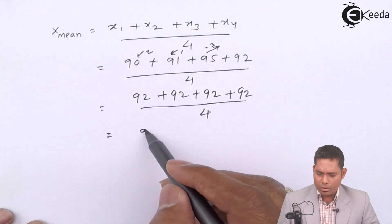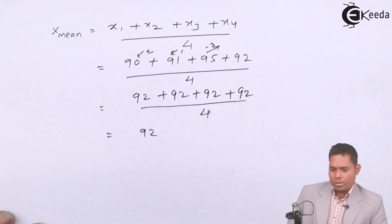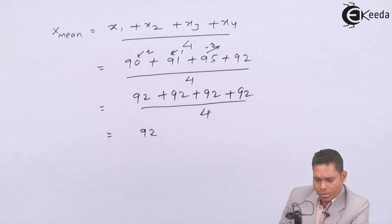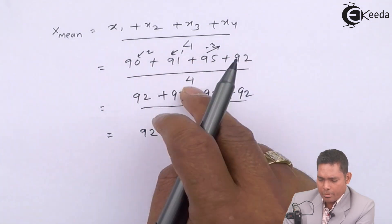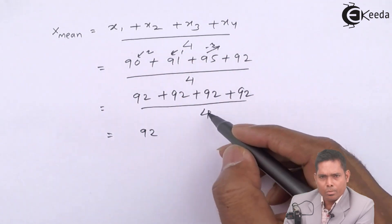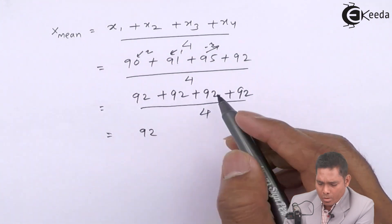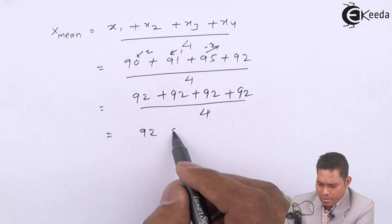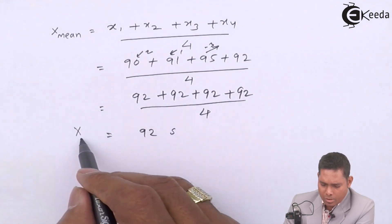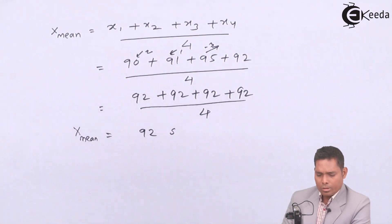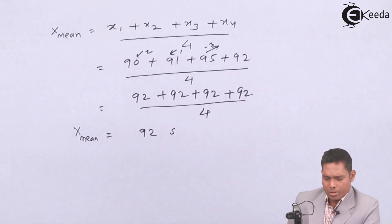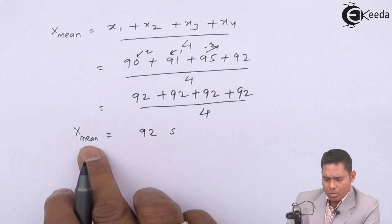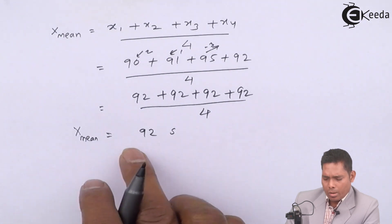So this is 92. This way you can save your time, otherwise you can add up and divide by 4. Then also divide by 4, 92. So this 92 seconds, we suppose that this is the exact value of the oscillation or mean value or true value.